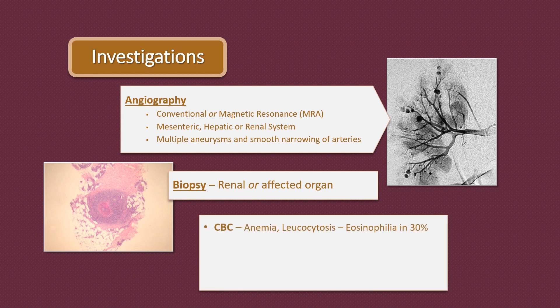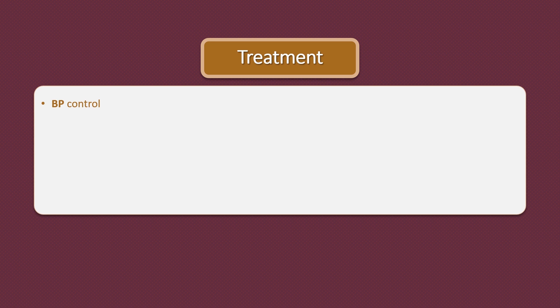CBC will reveal anemia and often increased white cell count. Mild eosinophilia will be noted in 30% of cases. ESR and C-reactive protein are raised. Antineutrophil cytoplasmic antibodies (ANCA) are negative. Since the disease is associated with hepatitis B, all patients shall be tested for this infection.